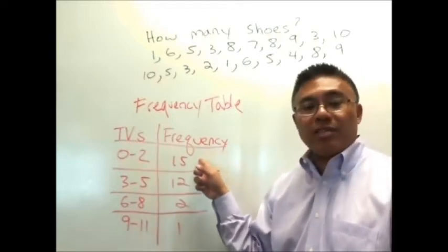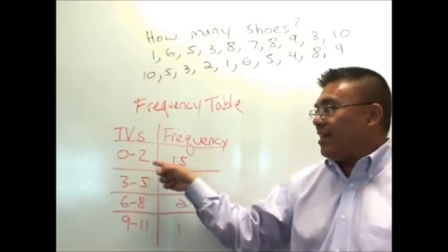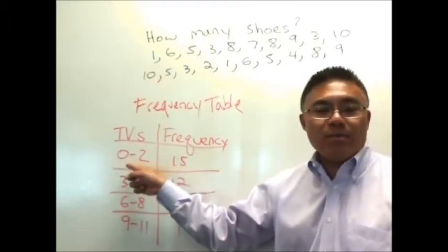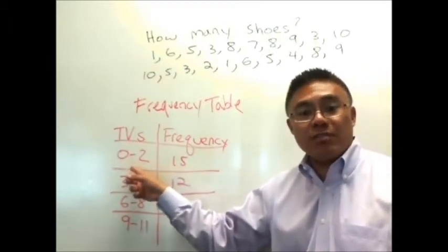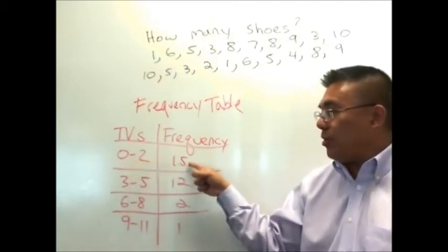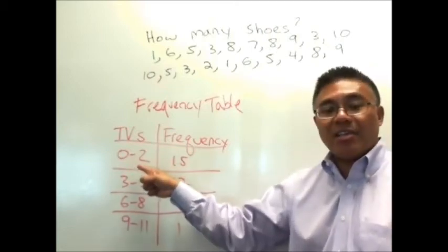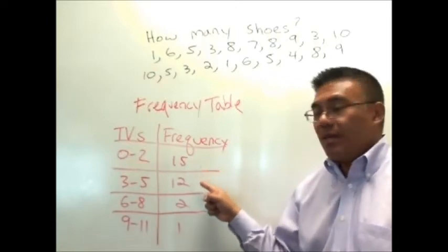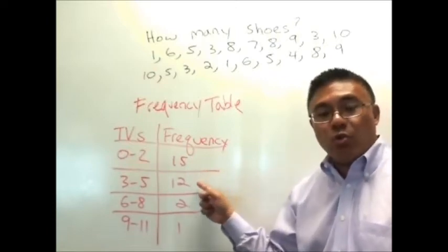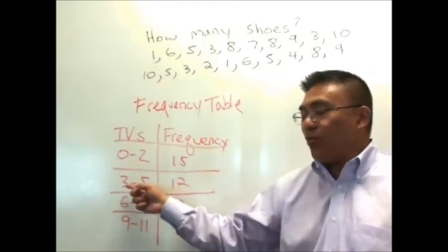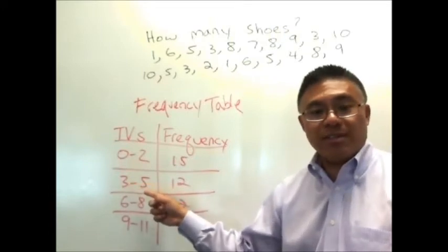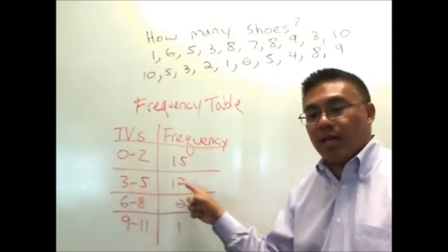This is the frequency. This is the number of people that said, oh yeah, I owned between zero to two TVs. I own zero TVs. I own one TV. I own two TVs. All those people belong to that class. So we know there are 15 of them. Here we know 12 people said they own between three to five TVs, right? Oh, I own three, I own four, etc., etc.